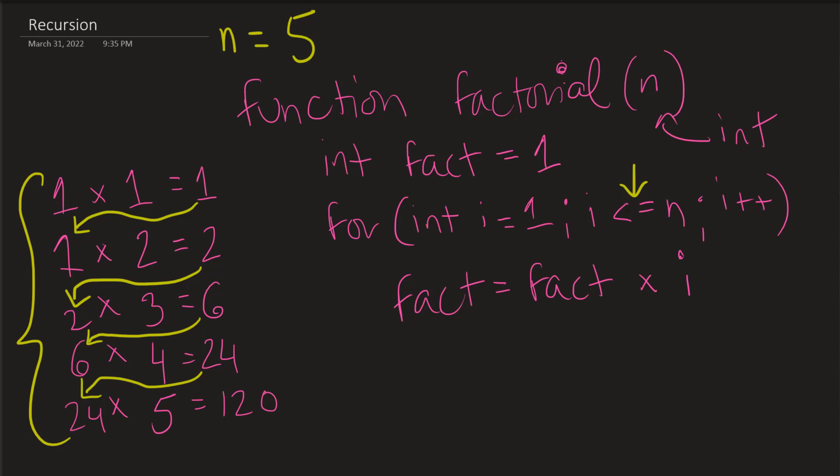So once we get through our entire for loop, we should end up with the number 120. It'll stop at five, so we have five iterations here. Our n is equal to five. We can return fact. So then if we call this, if we do like a print statement or something like that, then this will print 120.